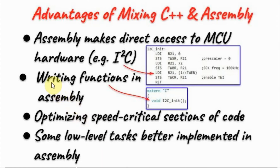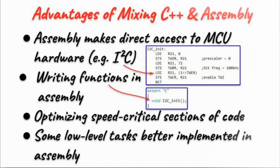Another advantage is that we can write some functions in assembly — for example, calling a C++ function will execute an assembly subroutine. Another advantage of mixing C++ and assembly is that we could optimize speed-critical parts of the code, especially in real-time applications. Finally, some low-level tasks are better implemented in assembly, for example programming the I2C module of the microcontroller.